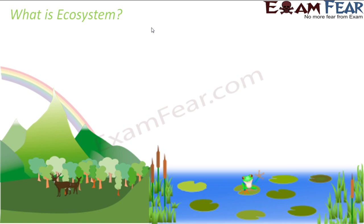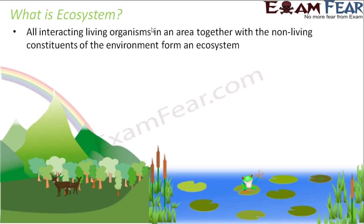Let us start with ecosystem, because first we want to understand the various components which together form this environment. When I talk about the components forming environment, it becomes very important to talk about ecosystem. It is made up of two words: eco and system. All interacting living organisms in an area, together with the non-living constituents of the environment, form the ecosystem. That means living components plus the non-living components.